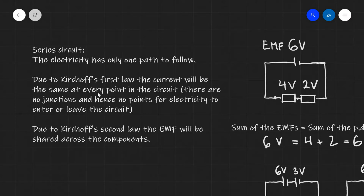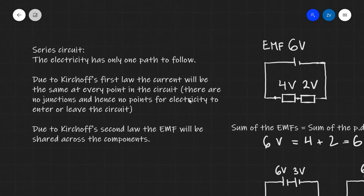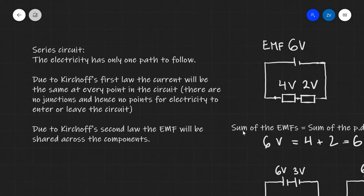Due to Kirchhoff's first law, this means the current will be the same at every point in the circuit, depending on the resistance of those two resistors. Because there are no junctions, there are no places for the electricity to either leave or enter the circuit. Additionally, due to Kirchhoff's second law, the EMFs will be shared across the components, because the sum of the EMFs is going to equal the sum of the PDs.